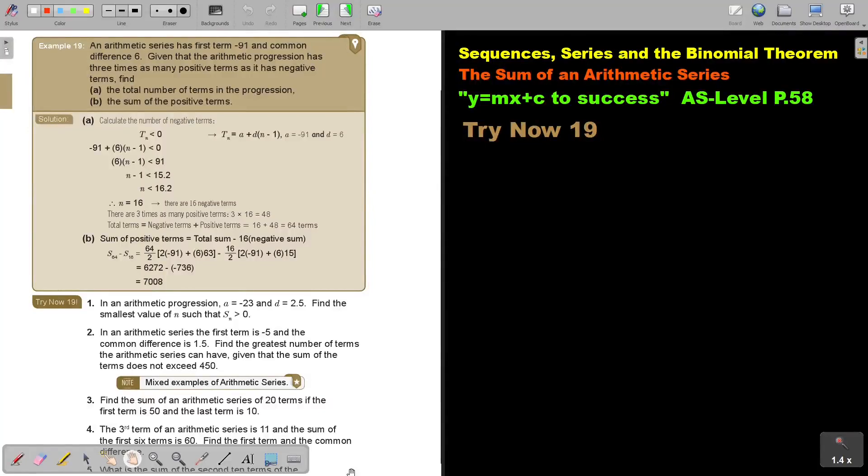In this video, we are going to still look at the sum of an arithmetic series. You will find this on page 58 in the Namibia AS Level Mathematics textbook, Y equals MX plus C to success. Let's look at another example.